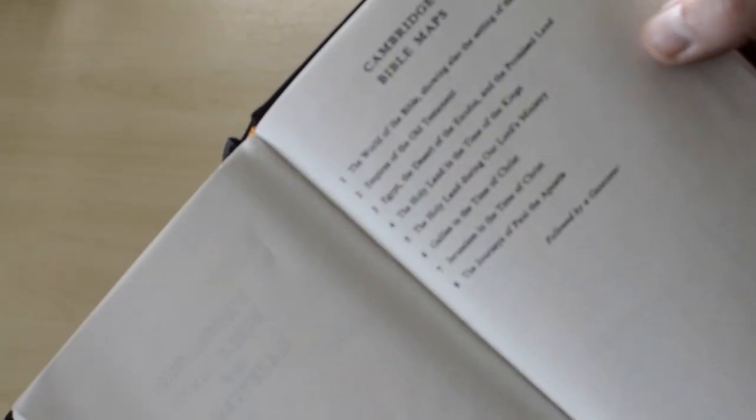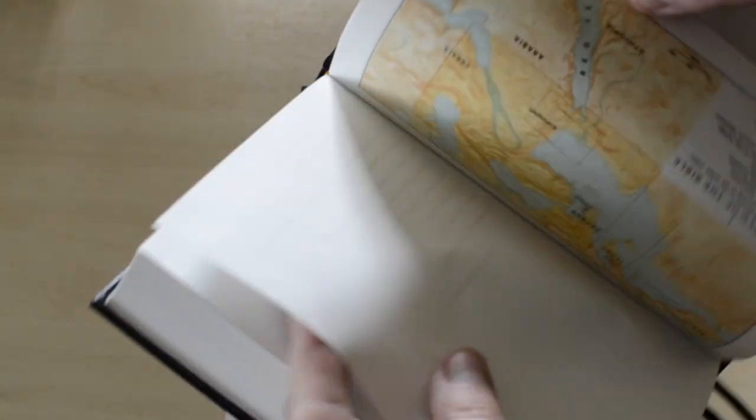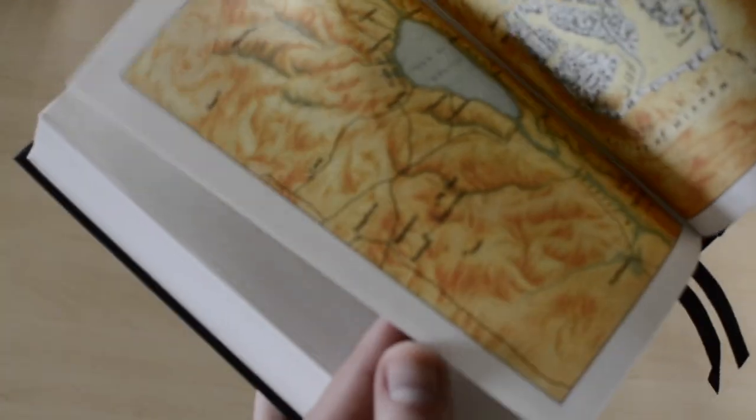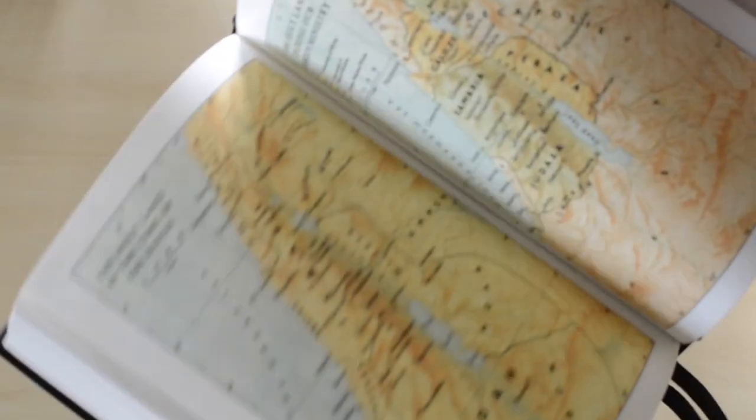There you go. Typical Cambridge. And then we have Cambridge maps. These are the old maps and here we find most KJV Bibles.